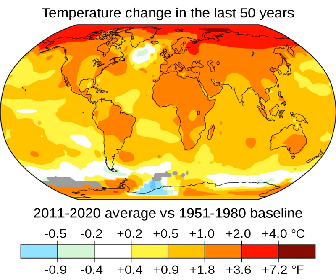Over 500,000 additional adult deaths are projected yearly by 2050, due to reductions in food availability and quality. Other major health risks include air and water quality. The WHO has classified human impacts from climate change as the greatest threat to global health in the 21st century. Climate change is affecting food security — it has caused reduction in global mean yields of maize, wheat, and soybeans between 1981 and 2010. Further warming could further reduce global yields of major crops. Crop production will probably be negatively affected in low-latitude countries, while effects at northern latitudes may be positive or negative. Up to an additional 183 million people worldwide, particularly those with lower incomes, are at risk of hunger. The effects of warming on the oceans impact fish stocks, with a global decline in the maximum catch potential. Only polar stocks are showing an increased potential.